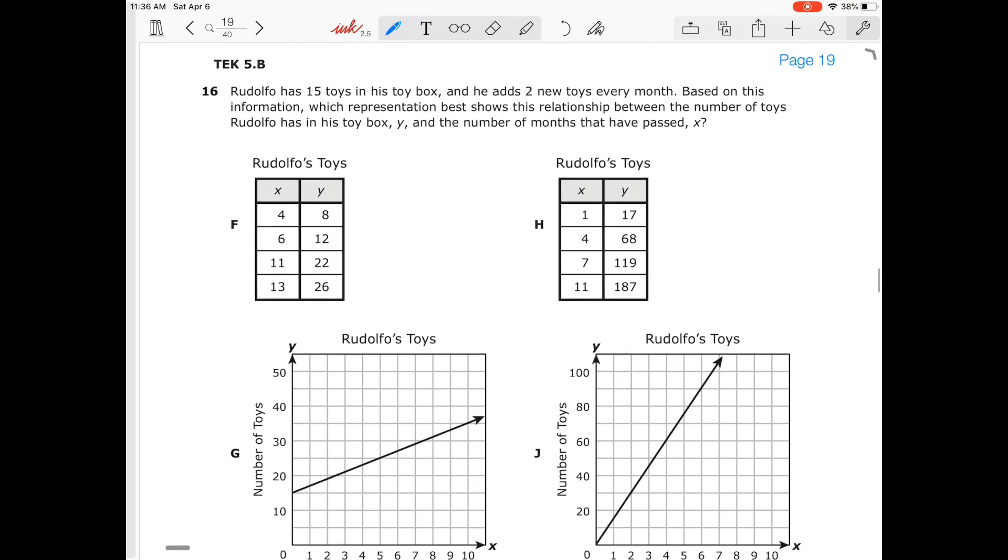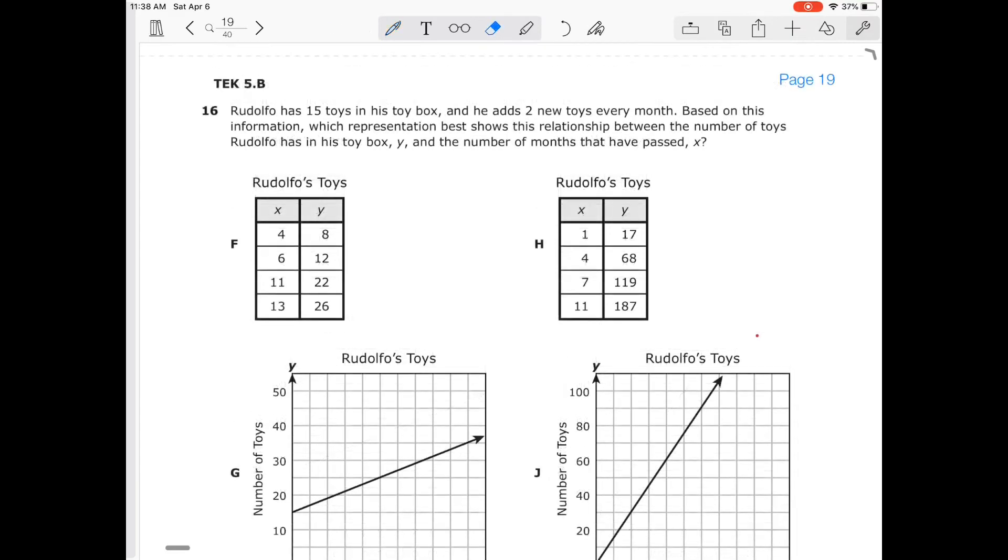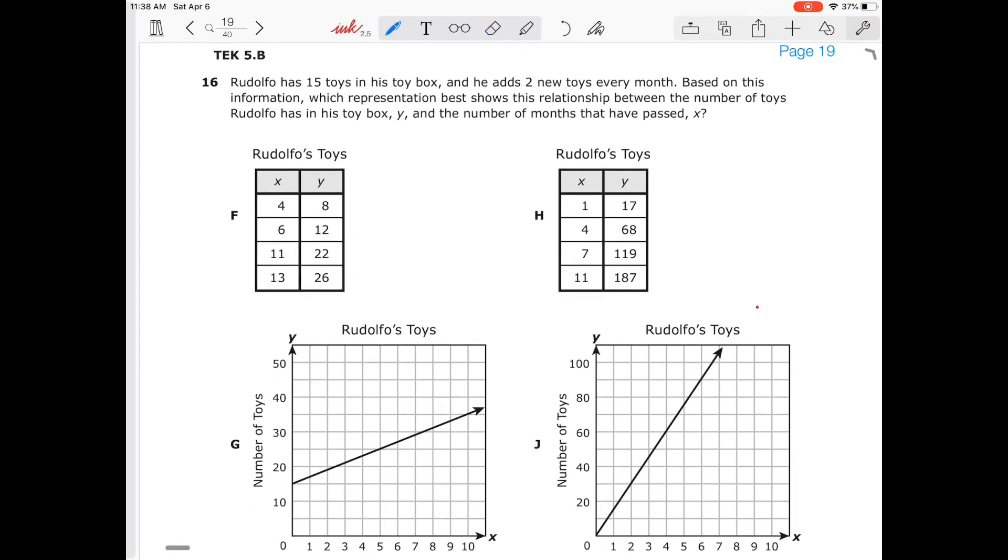I'll do number 16 in the next video. So in this video, it's really easy. All these questions are so easy. So Rodolfo has 15 toys in his box, and he has two new toys every month. So based on this information, which graph shows the best relationship between the number of toys that Rodolfo has in his box, y, and the number of months that have passed x.